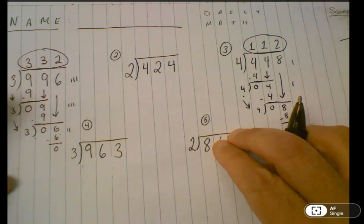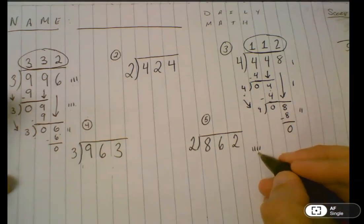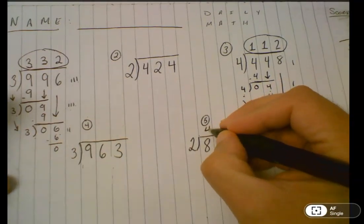Finally, can two go into eight? It sure can. Again, I skip count by two until I get close to eight. Two, four, six, eight. Part of my quotient goes into my answer.